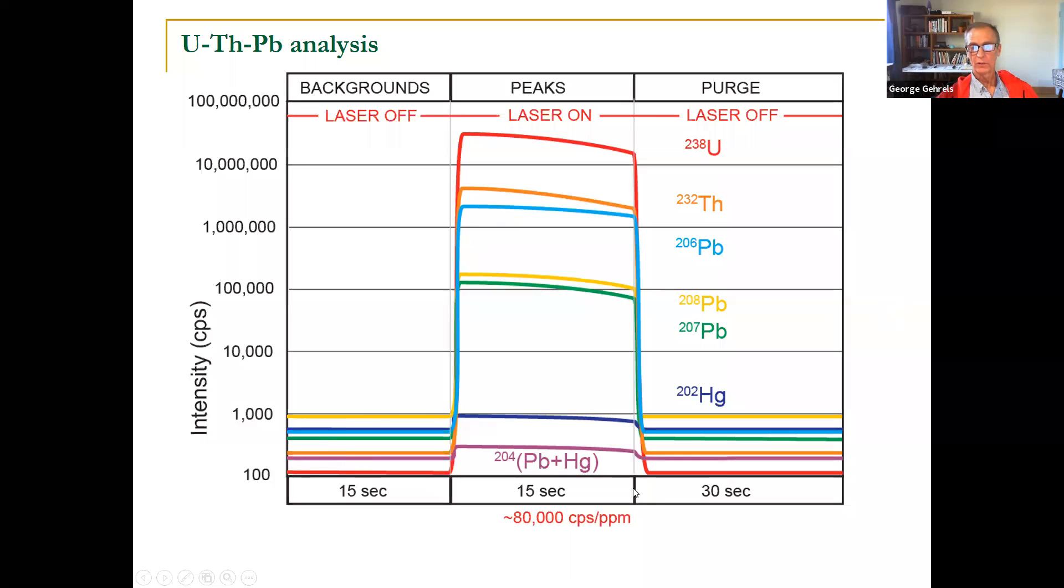So then you fire the laser right here. We might fire the laser for about 15 seconds. See lots of 238, a little bit less 232. You see some lead 206, 207, 208. You see some 204 down here in purple. You see some mercury. This is the challenge. There's mercury 202 and 204. What you also see on here is that the intensity decreases as you're drilling down into the zircon. The intensity comes down a little bit. And also the change in intensity for uranium is actually a little different than it is for lead. Lead and uranium behave differently as they come out of the laser pit and go into the mass spectrometer. So we're going to have to do another correction for that.